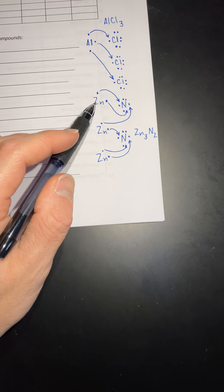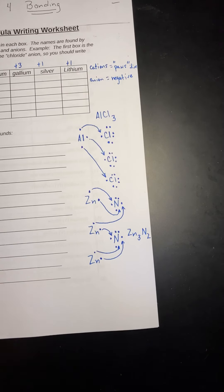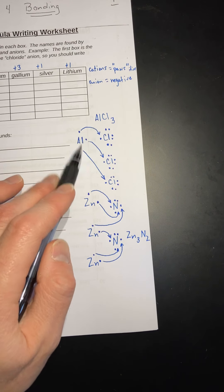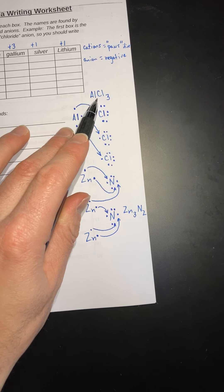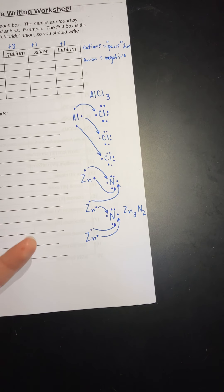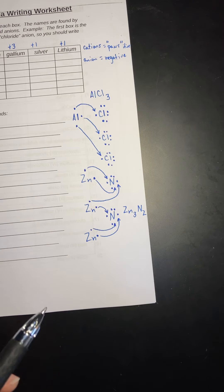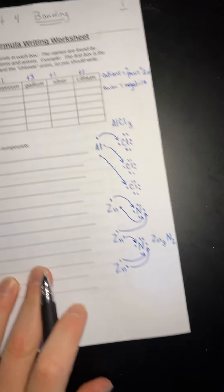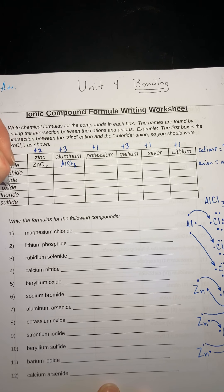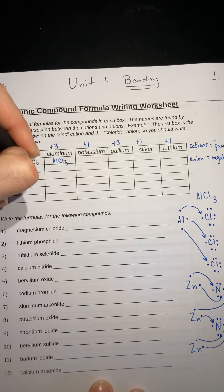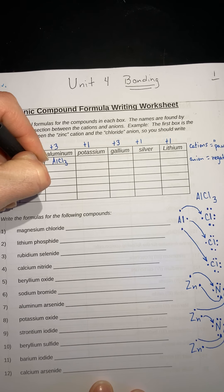Everybody understand where I got that? Because I have three zincs — Zn3 — and two nitrogens — N2. For the first example, I had one aluminum and three chlorines. Aluminum gets the one, but when you write a formula you don't write ones, so if there's one of something you just don't put a number. So in your slot, it would be Zn3N2.